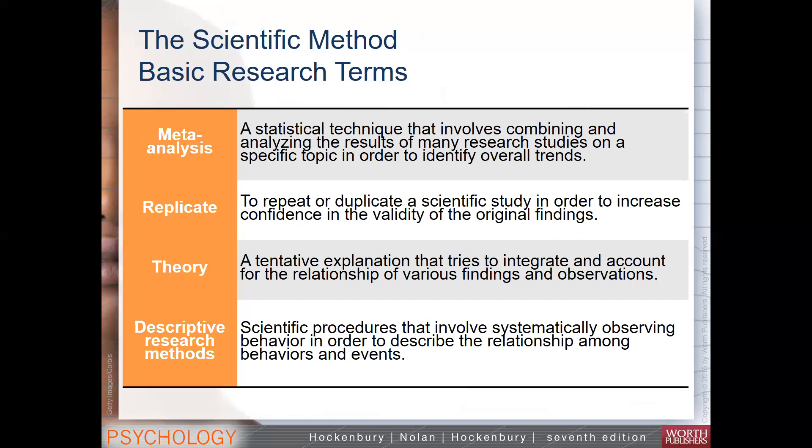Descriptive research methods are not going to show us causal relationships. We can't say that we run a descriptive study and then say A causes B. We can only describe what the data look like. For example, we could do an epidemiological study where we test how many people have diabetes and give the averages — we can describe relationships and the occurrence of something, but it does not allow us to give causality.